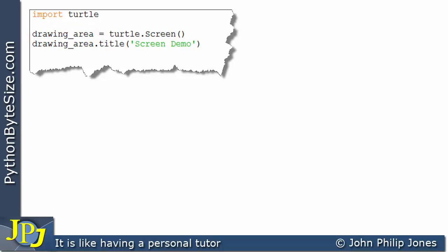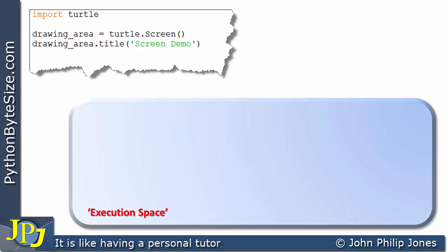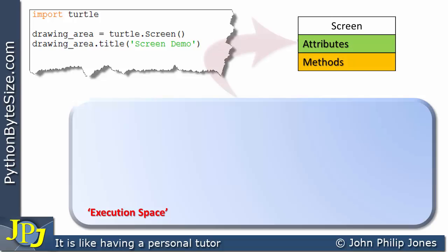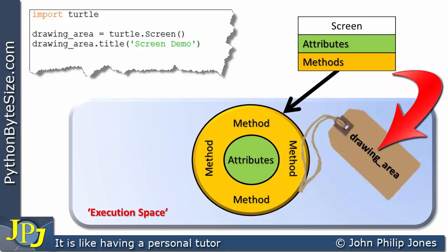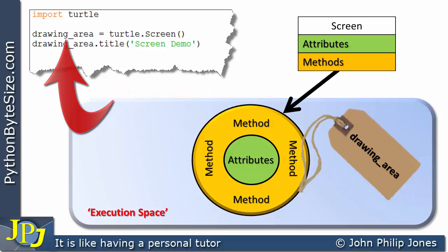And we can show that schematically here. We know we have an execution space. This is the screen class, and an instance of it is created, and we can see it's labeled with the name drawing underscore area, which is the name here in the code.